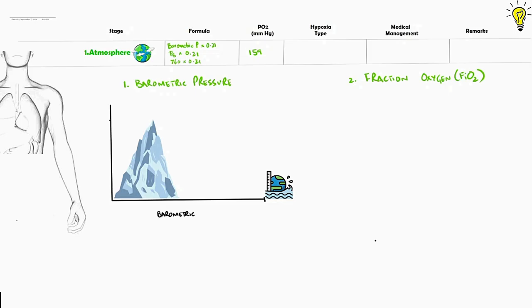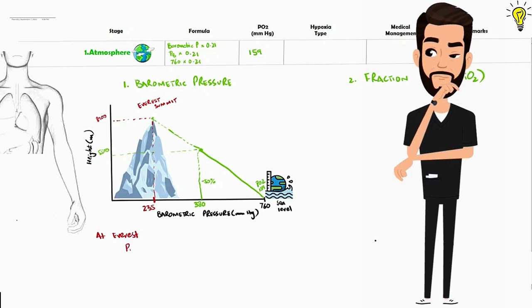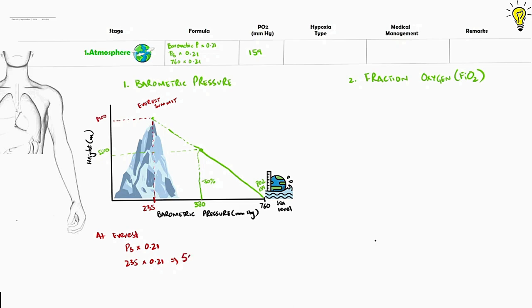At sea level, barometric pressure is 760 mm of mercury. On extreme end, let's compare it with Mount Everest summit, located at 8900 meters above sea level. As we ascend around 5500 meters above sea level, the barometric pressure is literally reduced by half. At the summit of Everest, the barometric pressure is reportedly 235 mm of mercury. Oxygen fraction of air will stay at 21%, but now the pressure of oxygen in air at summit will be 235 multiplied by 0.21 equals 50 mm of mercury.